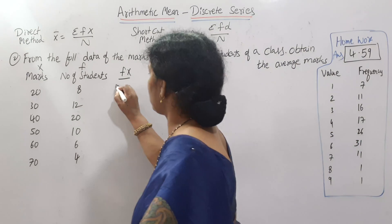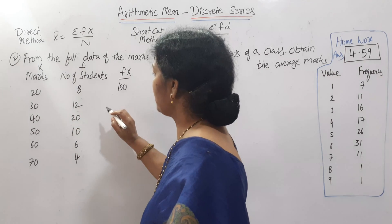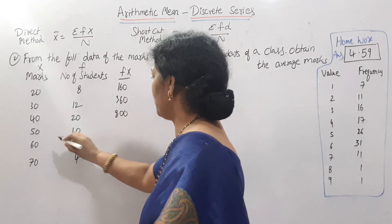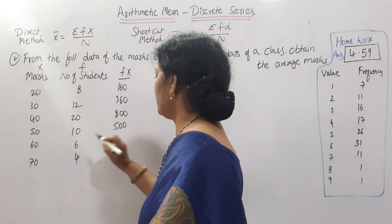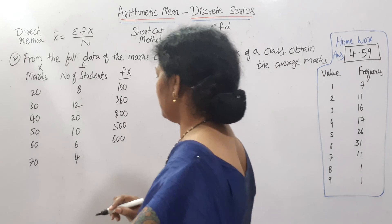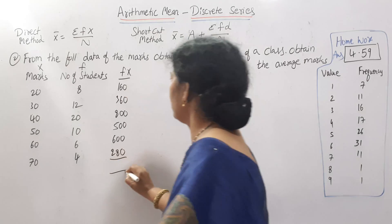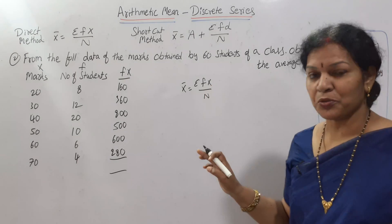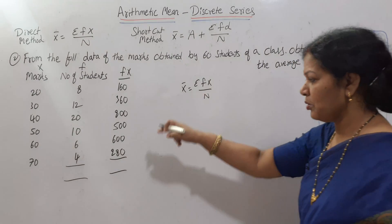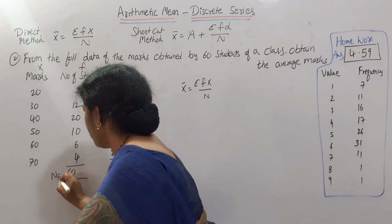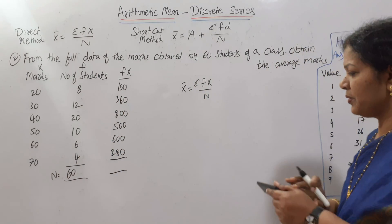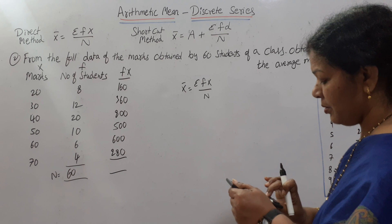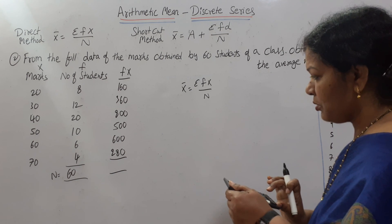Now calculating FX: 20 × 8 = 160, 30 × 12 = 360, 40 × 20 = 800, 50 × 10 = 500, 60 × 6 = 600, 70 × 4 = 280. N is the number of students, which is already given as 60. Now let's total up ΣFX: 160 + 360 + 800 + 500 + 600 + 280 = 2700.